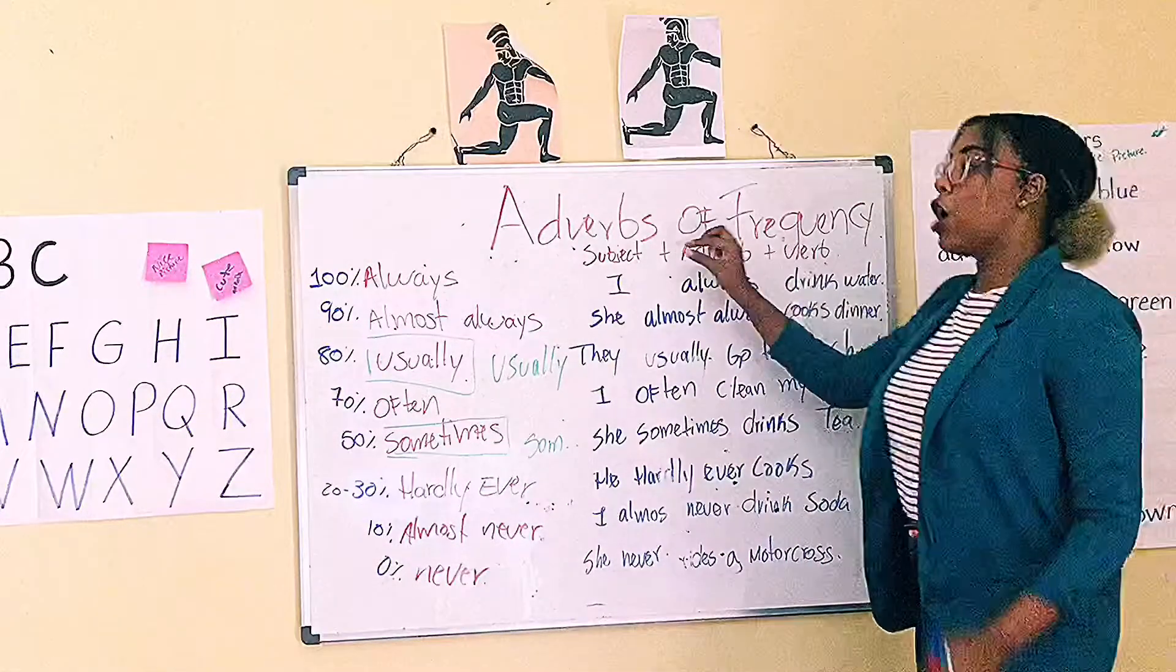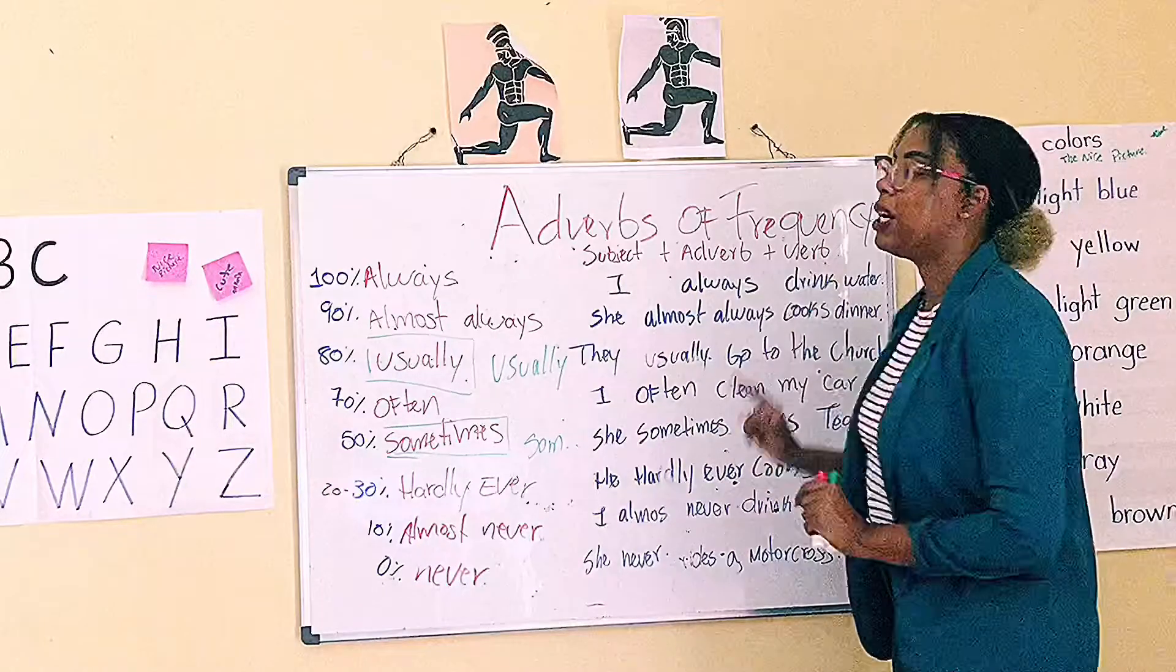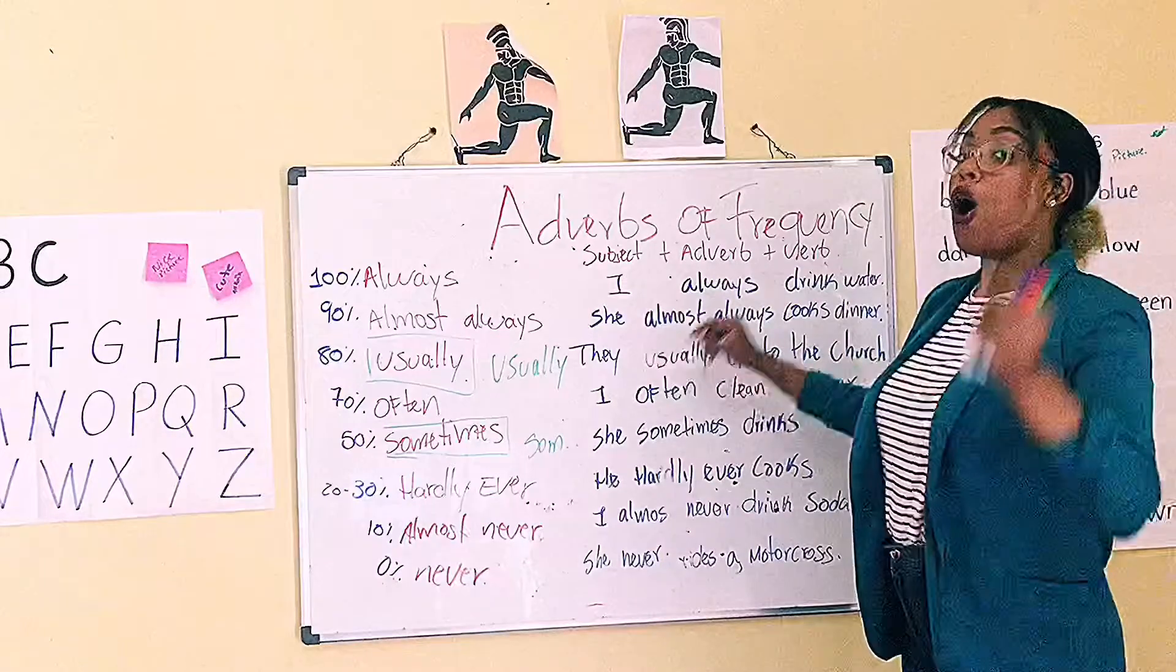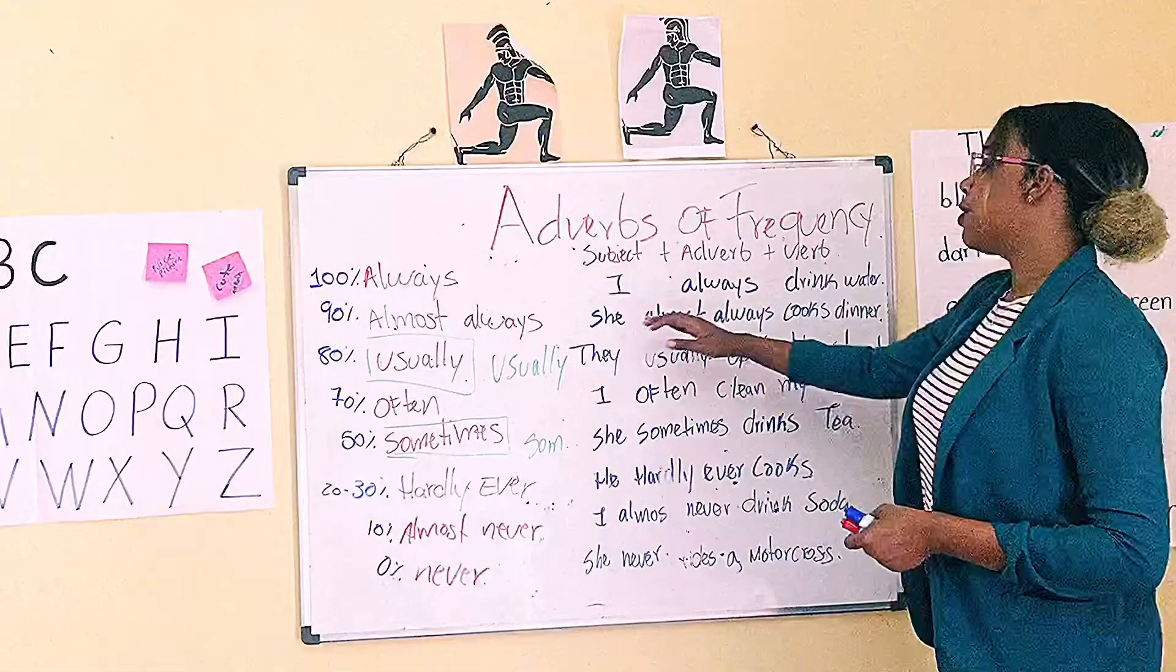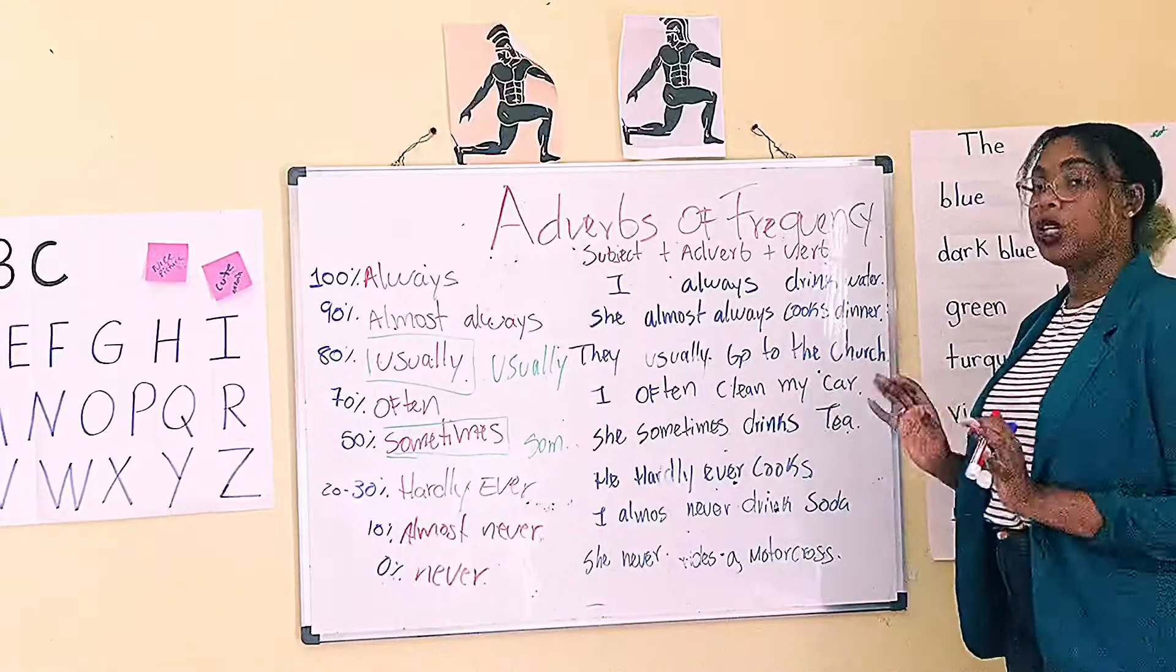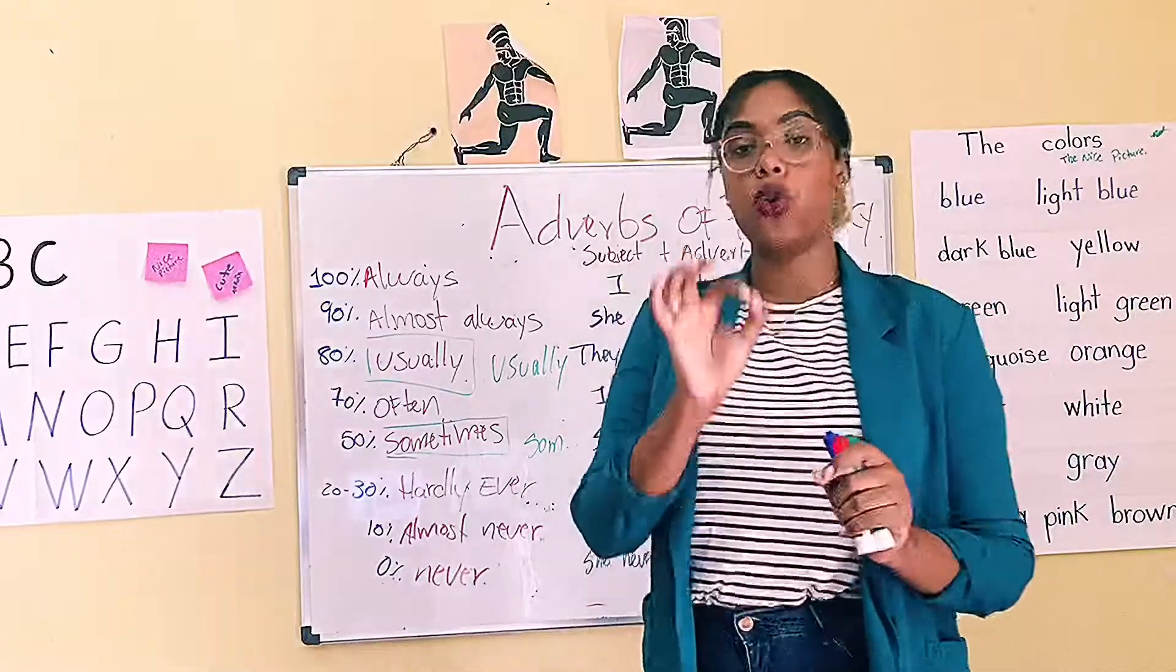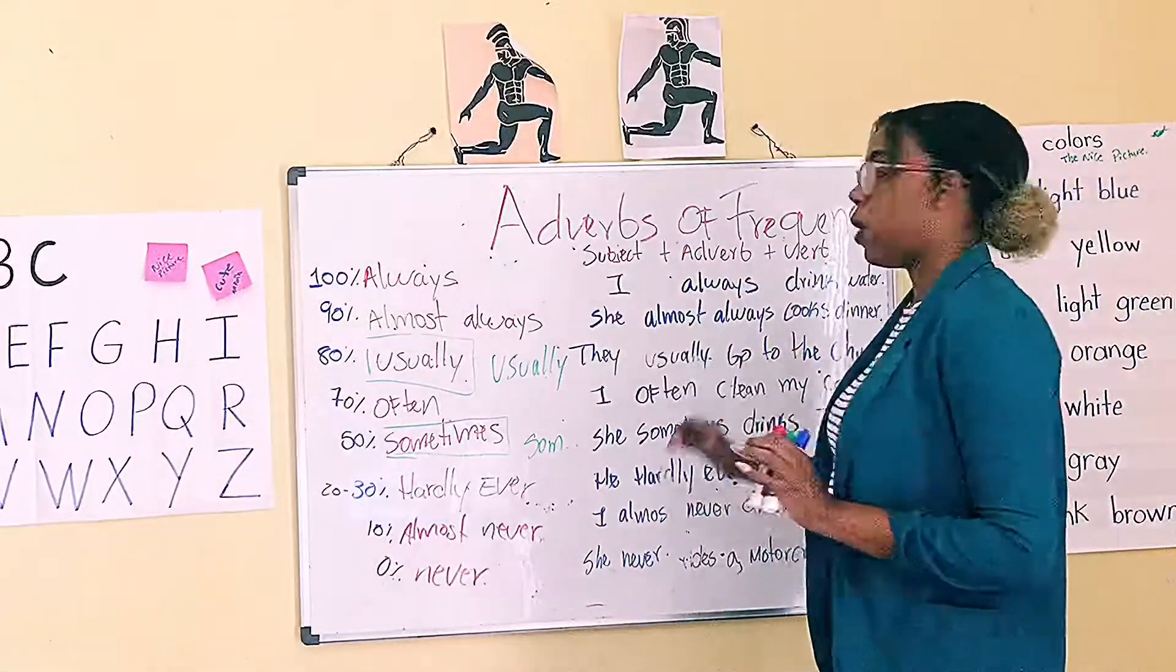You need a subject, you need your adverb of frequency, and you need the verb. Let's see one example: I always drink water. Second, she always, or she almost always, cooks dinner. Remember to conjugate your verb. They usually go...